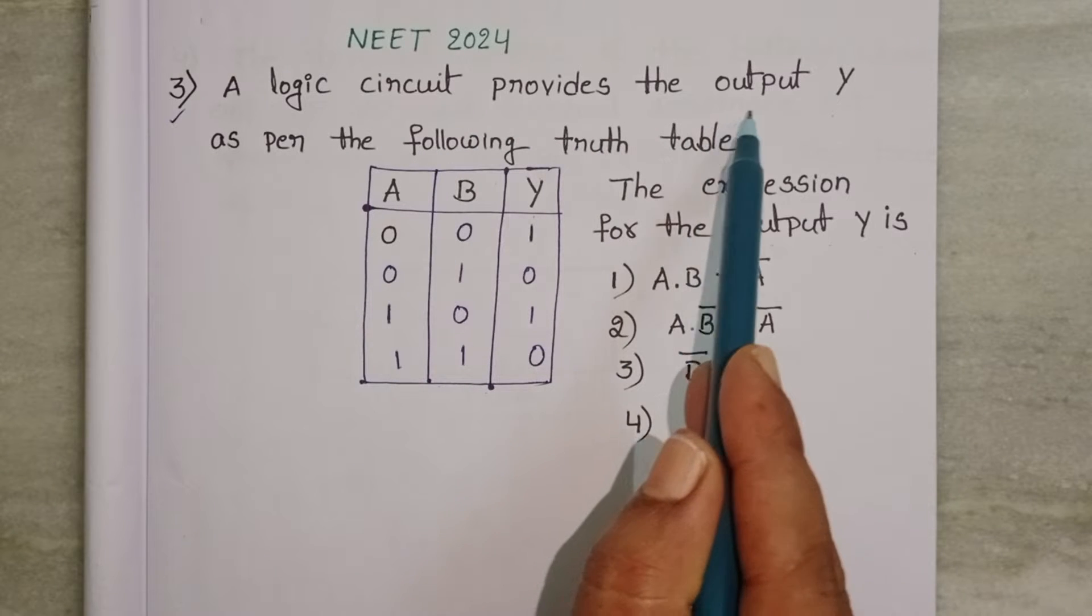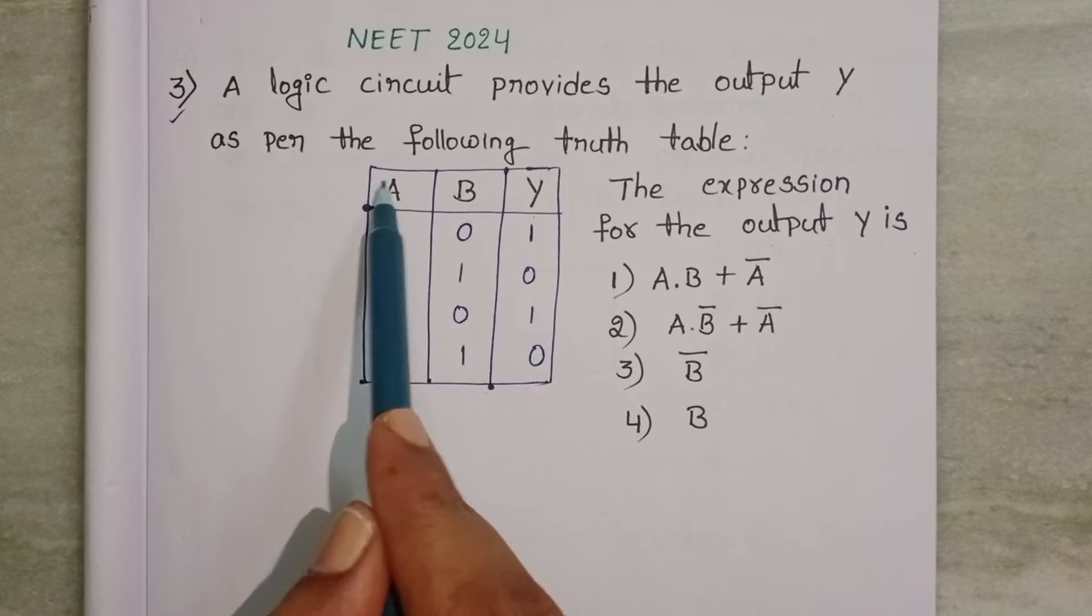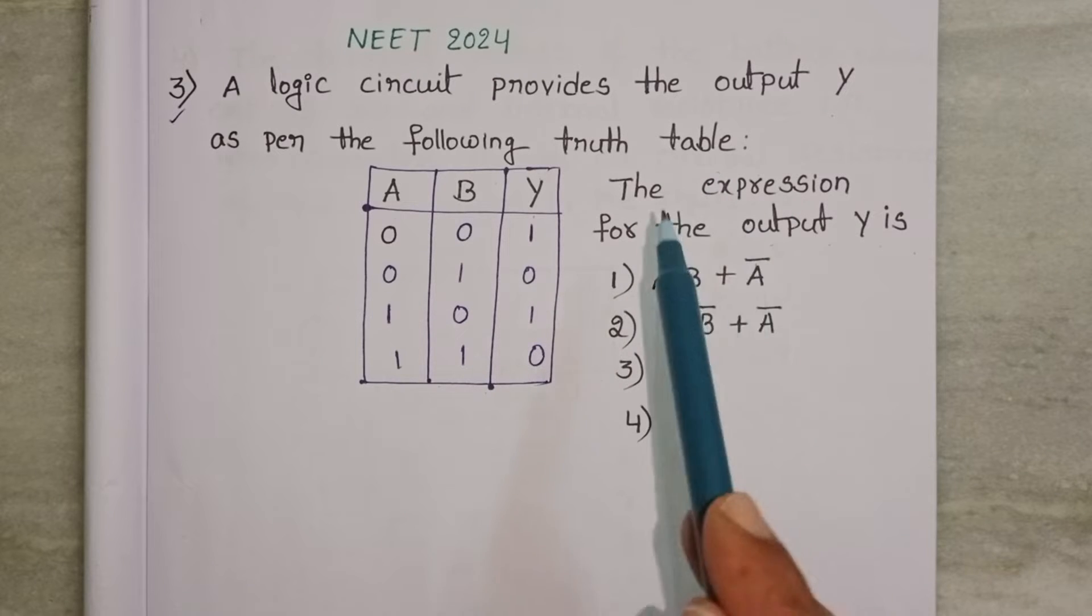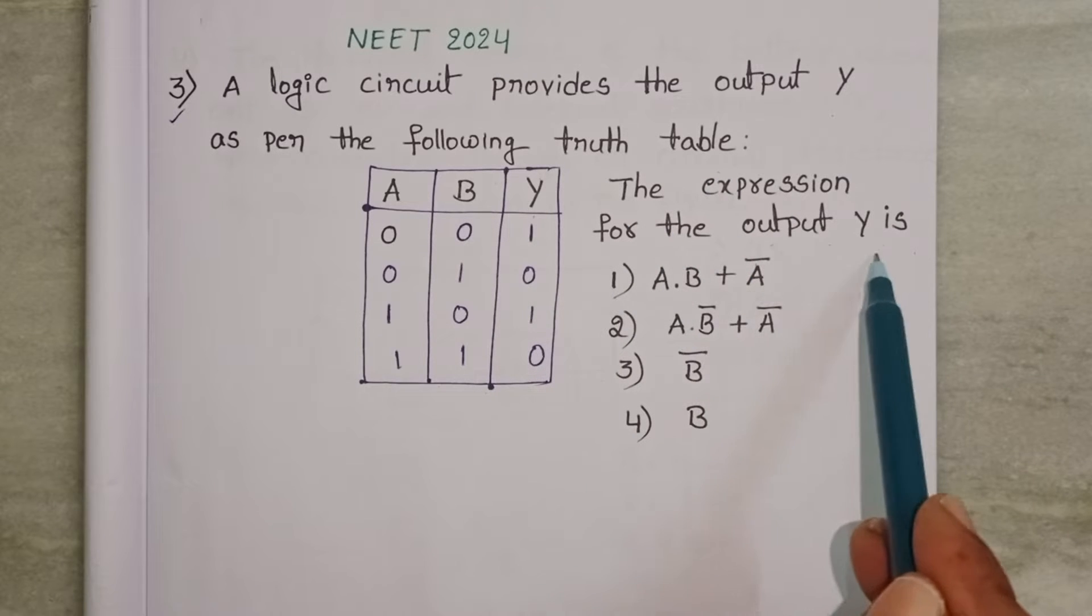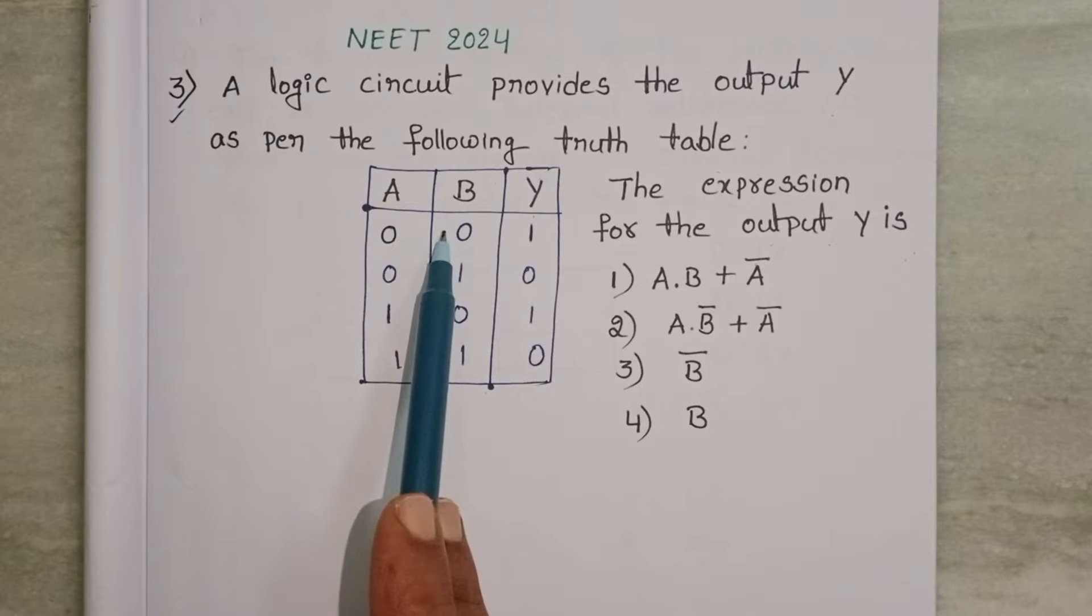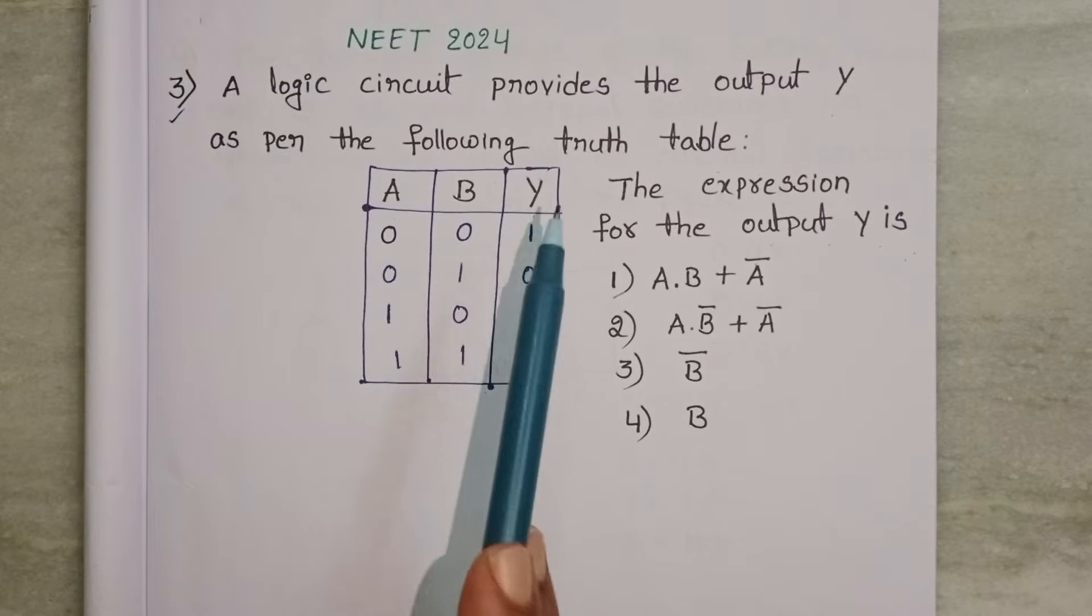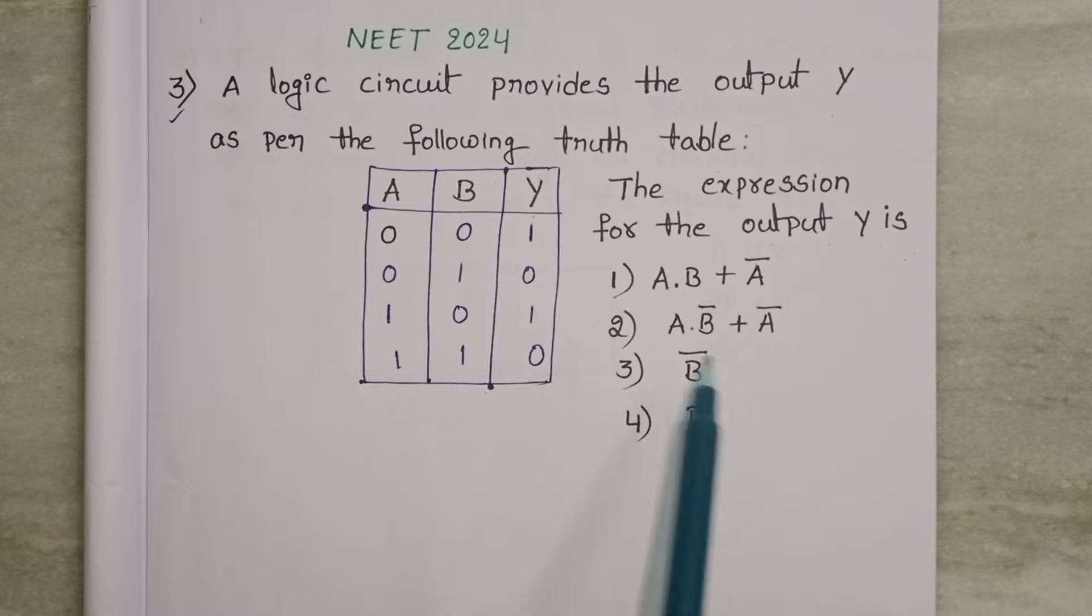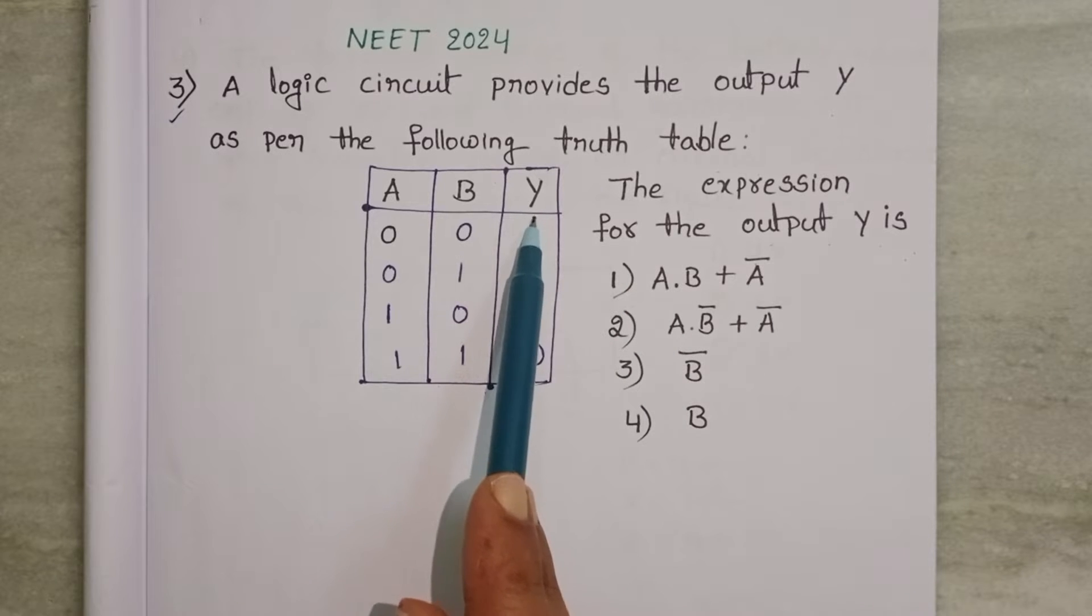A logic circuit provides the output y as per the following truth table. The expression for the output y is. Here a and b these two are inputs and y is the output. We have to find which expression is correct for the given output.